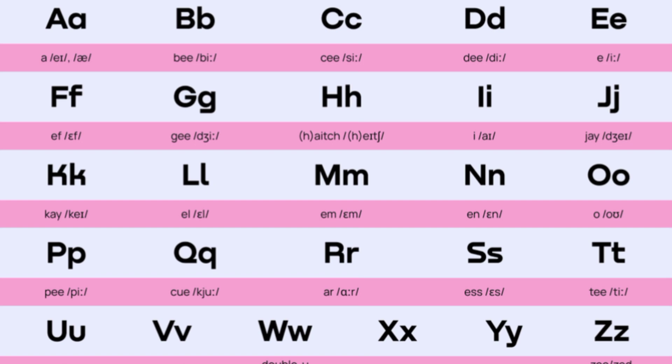You already know that there are 26 letters in English alphabets, and these letters can be divided into three categories.